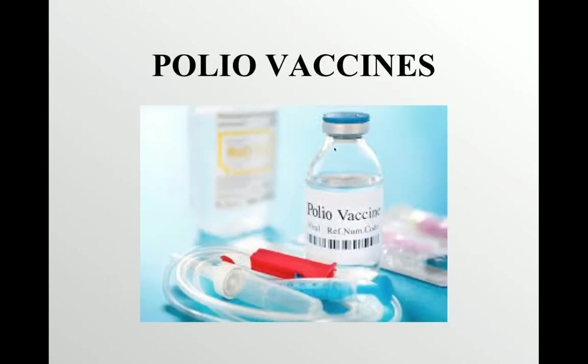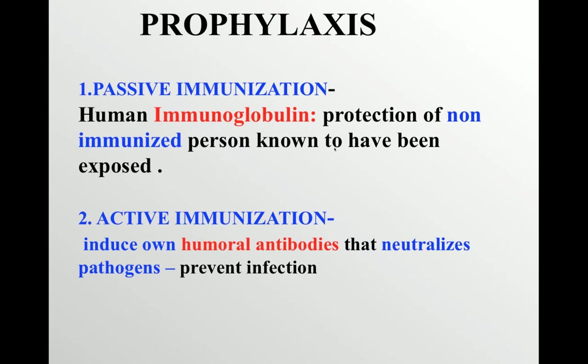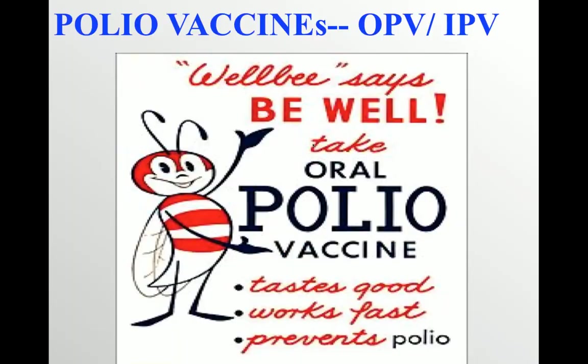Moving on to polio vaccines: both oral and live attenuated polio vaccines are used worldwide. The oral polio vaccine has been the vaccine of choice for eradicating polio globally because it can be easily administered, it causes intestinal immunity, and it is cost-effective. The only rare side effect is paralytic poliomyelitis, seen in one in 2.4 million doses.